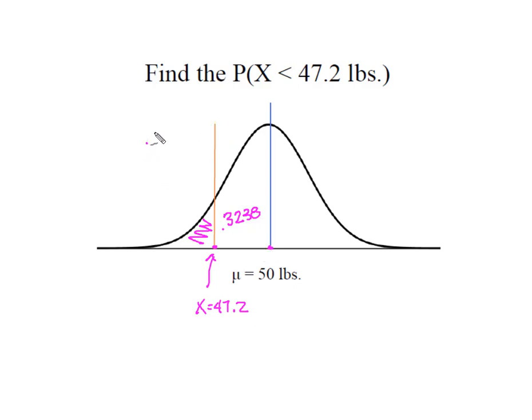I know that this entire side of the curve is equal to 0.5, so I'm simply going to take that 0.5 minus my 0.3238, which will isolate that area in the tail.